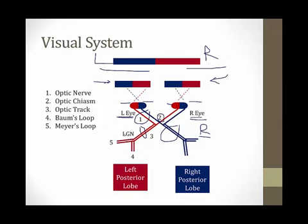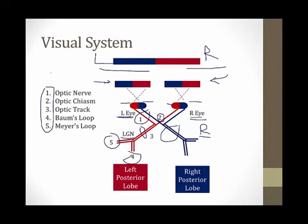From here, signals travel to the lateral geniculate nucleus. At that point, they split into two projections which go to the posterior lobe of the brain. One of those projections is called Baum's loop and the other one is called Myers' loop. It's very important you understand this illustration because defects of each of the five points in this visual system result in characteristic eyesight deficits.